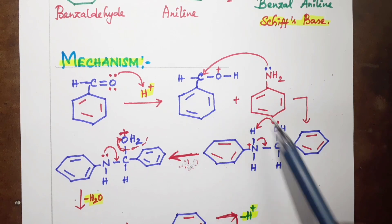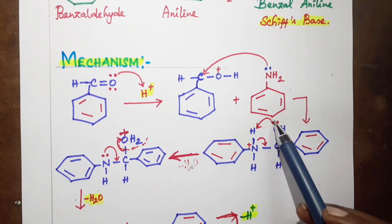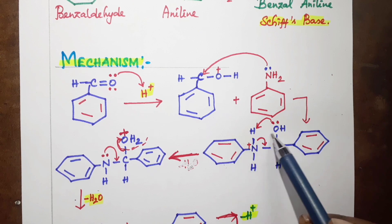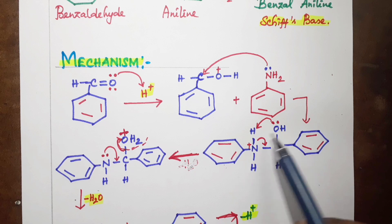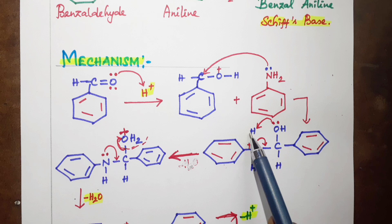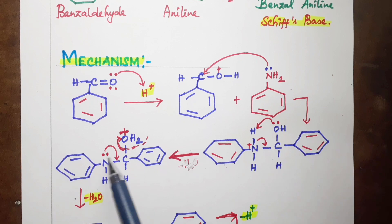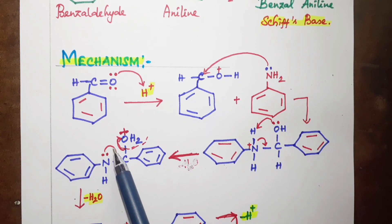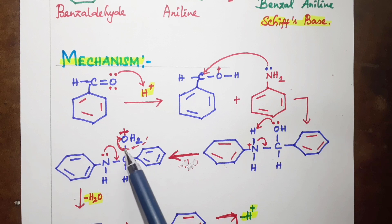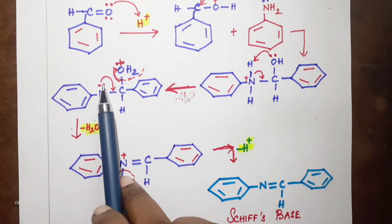The nitrogen of aniline, carrying a lone pair of electrons, attacks the carbon of the protonated carbonyl. An intermediate is formed with O–H and N–H bonds. The oxygen then leaves as a water molecule (H2O is eliminated), and nitrogen retains its lone pair.